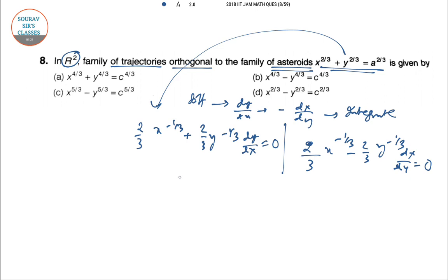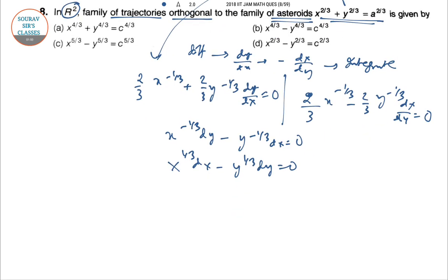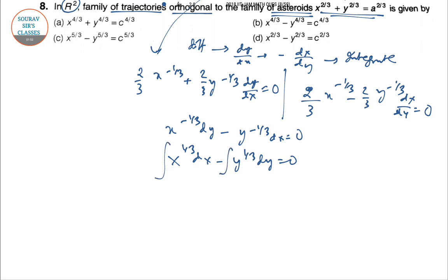So, both sides. y to the power minus 1/3 dy minus y to the power minus 1/3 dx equal to 0. So, x to the power minus, y to the power minus 1/3 dy equal to 0. So, both sides cross.